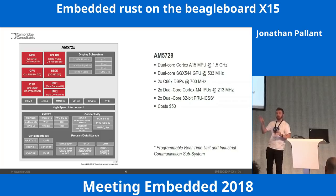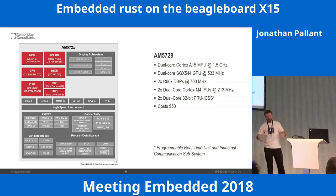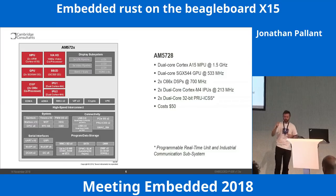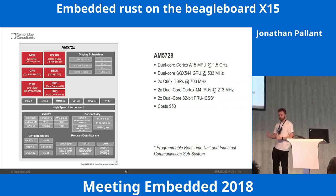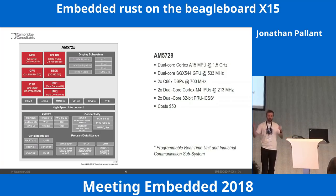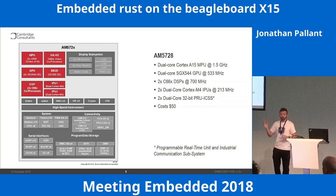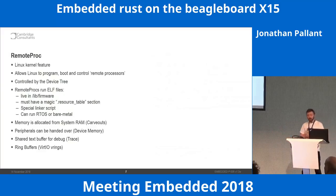The Cortex-M4s share memory with the rest of the CPUs. TI also throws in two PRUICSS units — the Programmable Real-Time Unit and Industrial Communication Subsystem. They're even smaller than a Cortex-M, like really simple microcontrollers. You get a couple of those as well. The chip itself is about 50 bucks, which I don't think is too bad considering what you get.